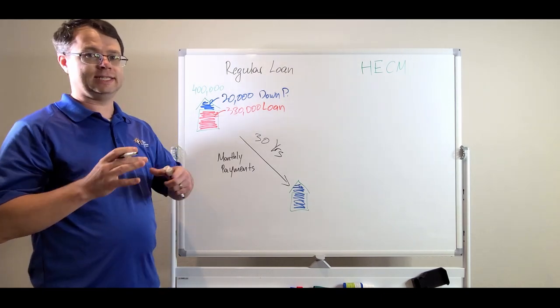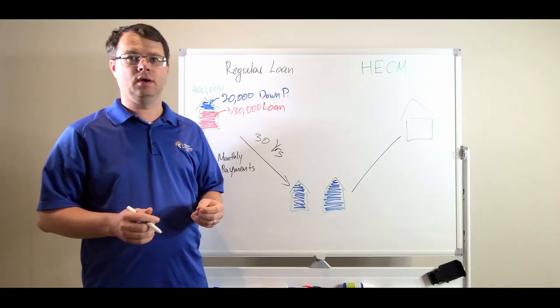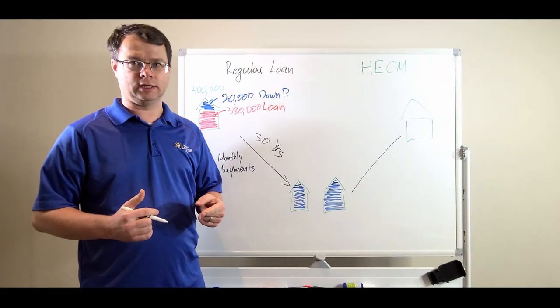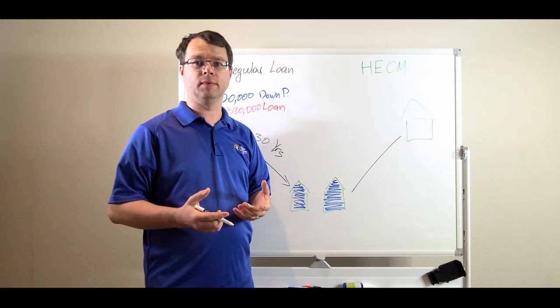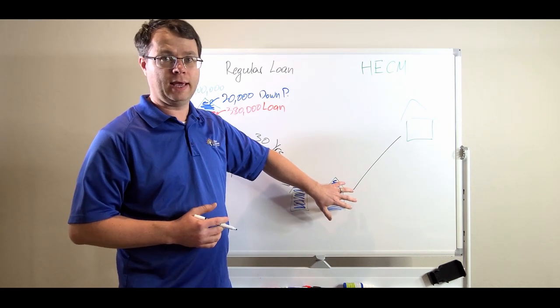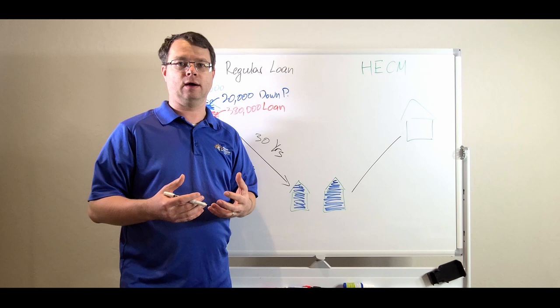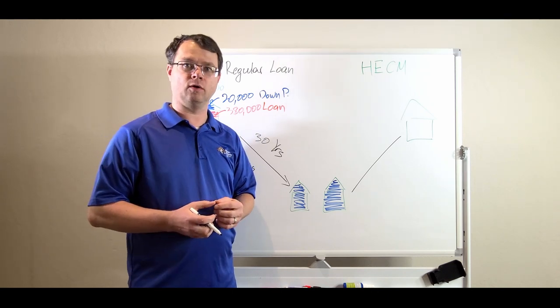Now, let's take a look at a HECM. A HECM works in an opposite direction. That's why sometimes this loan is called a reverse mortgage. Let's say you have equity in your home, and you need to use that equity as cash. You want to pull cash out of the equity of your home.